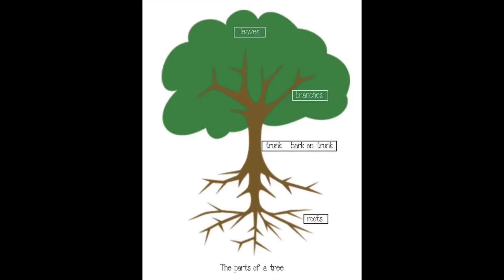Roots absorb water and nutrients from the ground. Absorb means to take in, just like a sponge absorbs water. The water and nutrients travel up from the roots through the trunk and into the branches. Do you know why leaves are such an important part of a tree? Leaves are important because they enable the tree to produce food. Tree leaves produce food through photosynthesis, just like the leaves of flowering plants.